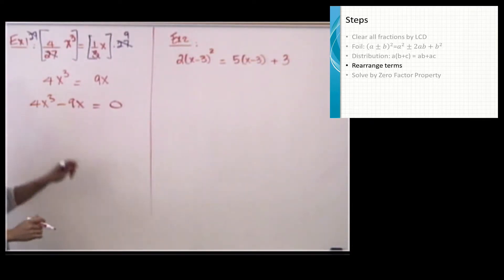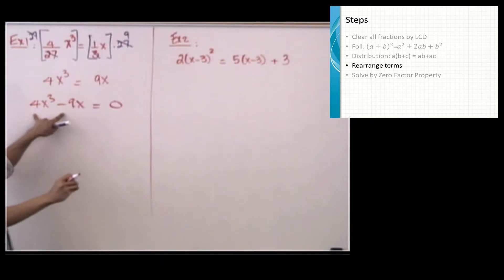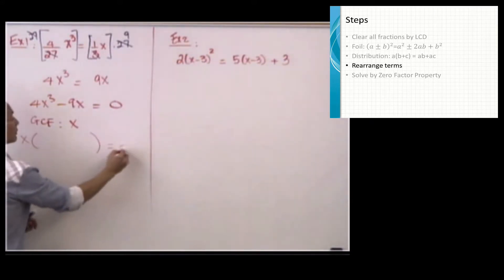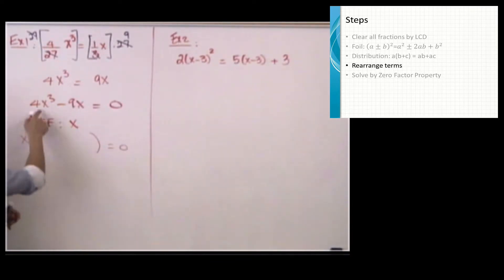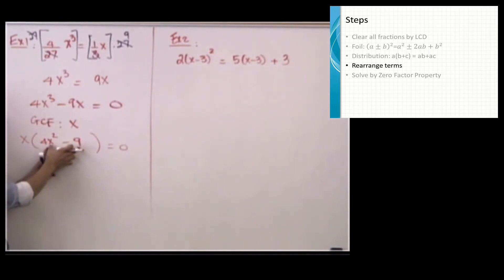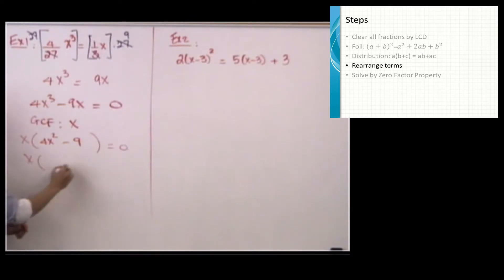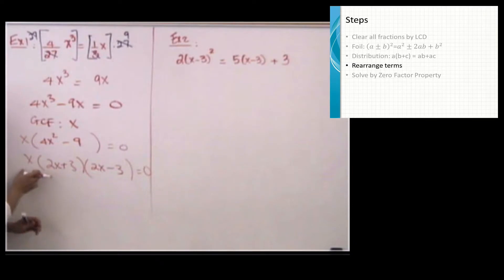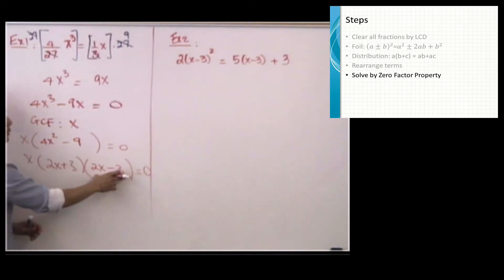I ask myself: can I factor any GCF out? We do have a GCF of x among these two terms. I factor out x, and the remainder is 4x squared minus 9. Notice that 4x squared minus 9 is a difference of two perfect squares, so it breaks down as the product of two conjugates: 2x plus 3 times 2x minus 3. Applying zero factor property, we have x times 2x plus 3 times 2x minus 3 equals zero.